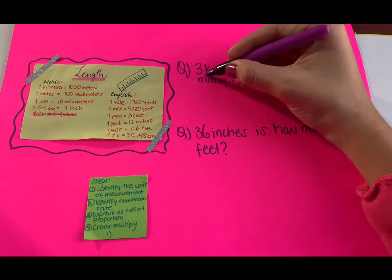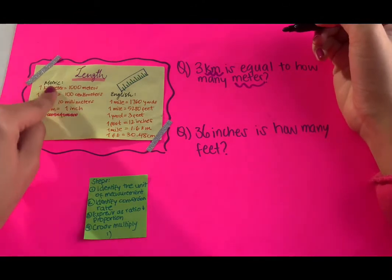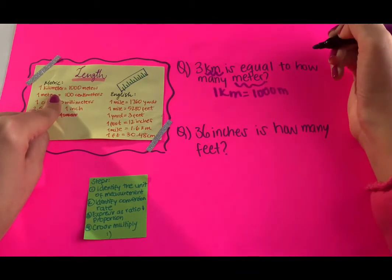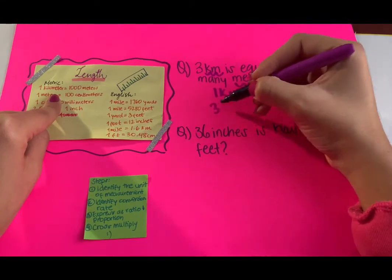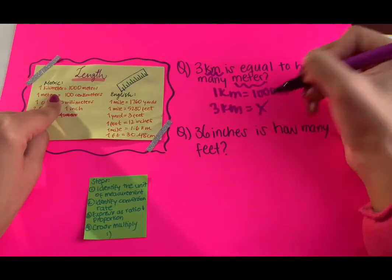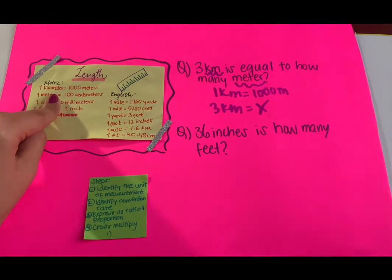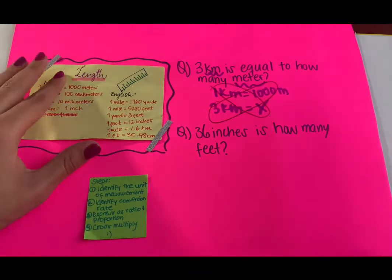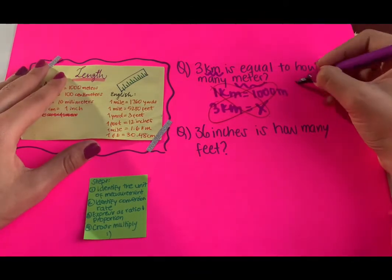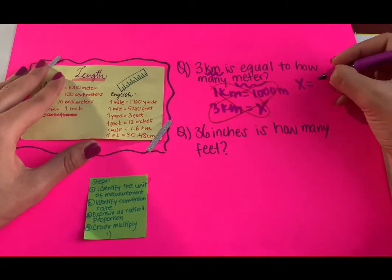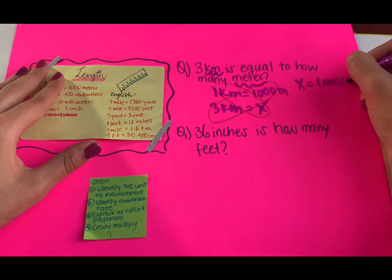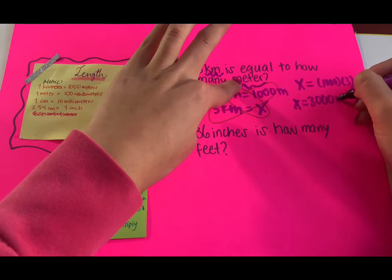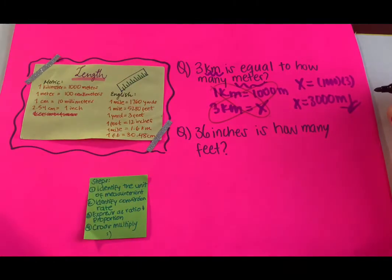Now the length section. Three kilometers equals how many meters? We have kilometers and meters — find it: one kilometer equals 1000 meters. We have 3 kilometers on the left side; meters is our x. Cross multiply: x multiplied by 1 is x, and 1000 multiplied by 3 is 3000. Your units are meters, so the answer is 3000 meters.